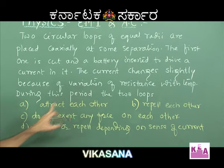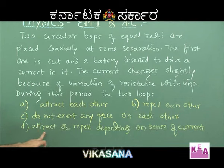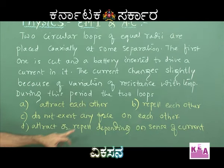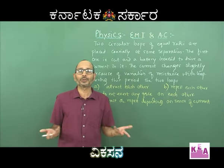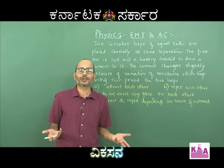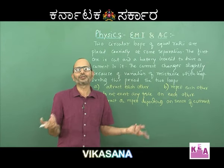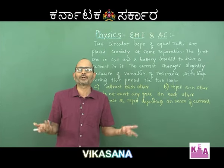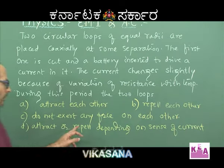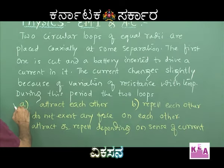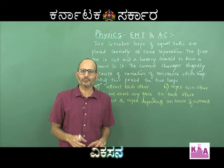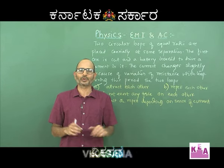They do not repel, and the option 'attract or repel depending on the sense of current' is also wrong — because the battery polarity is fixed, the direction of current does not change. The correct option is A: they attract each other. I hope you thoroughly enjoyed this problem and the explanation was quite clear.